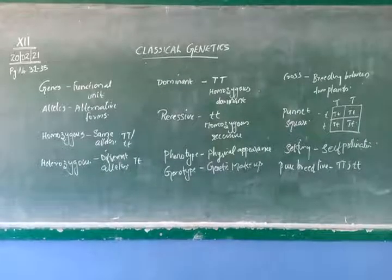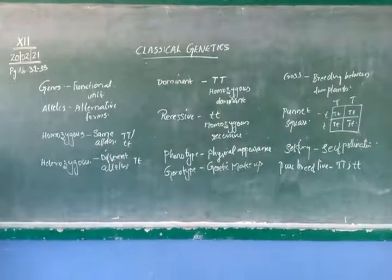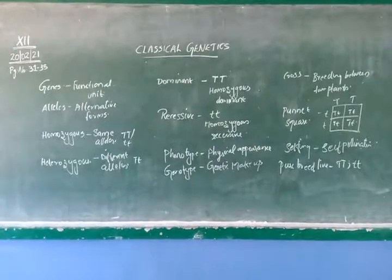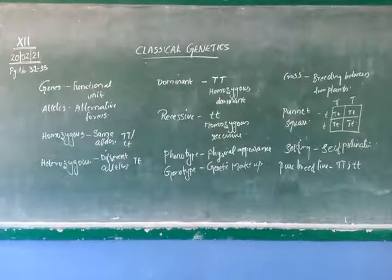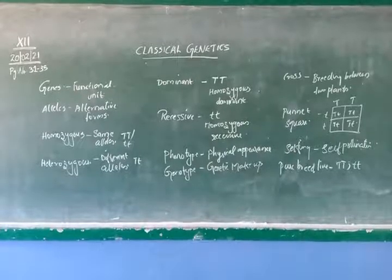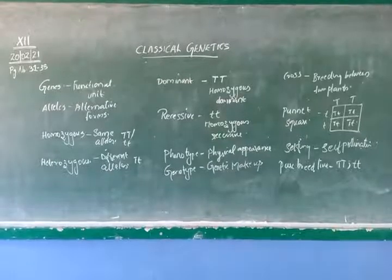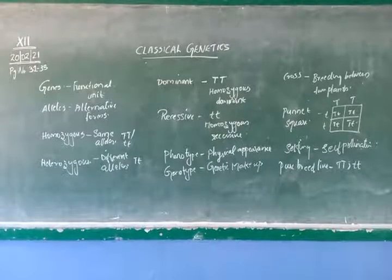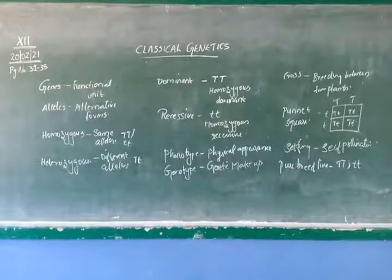Monohybrid, dihybrid and trihybrid crosses: monohybrid cross means we take only one character of the individuals for the cross. Dihybrid means we take two characters of the individuals. Trihybrid means we take three characters of the individuals for the cross. These are the terms related to Mendelism.